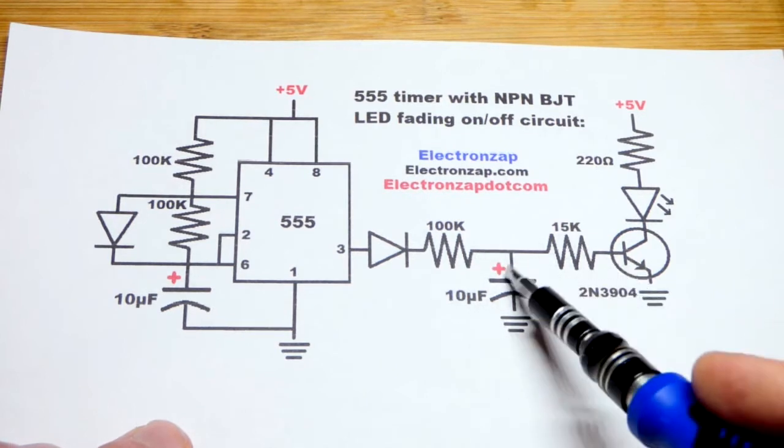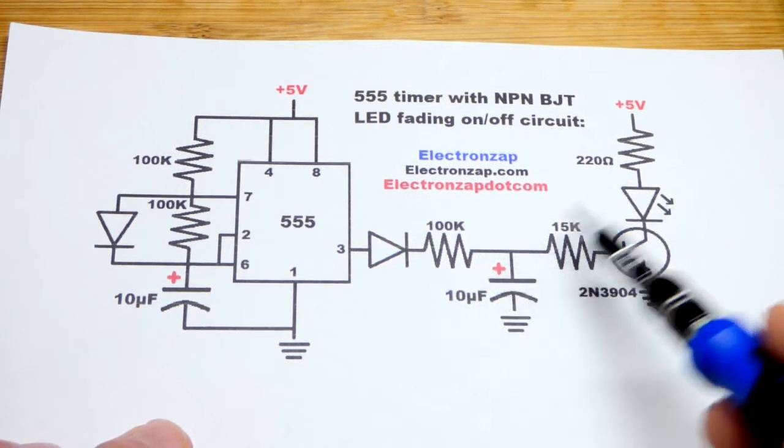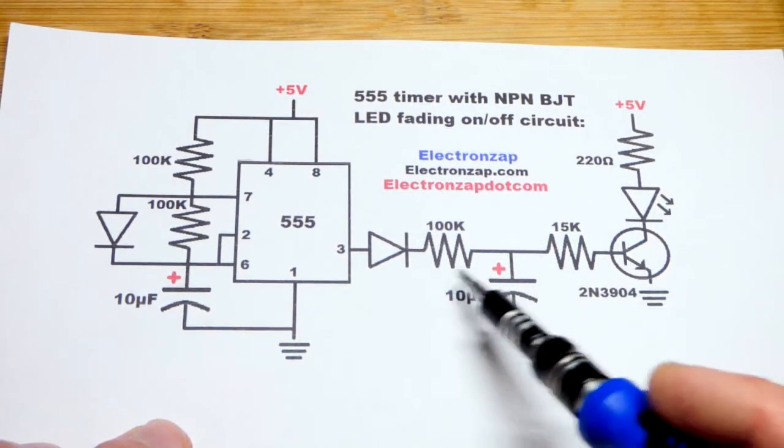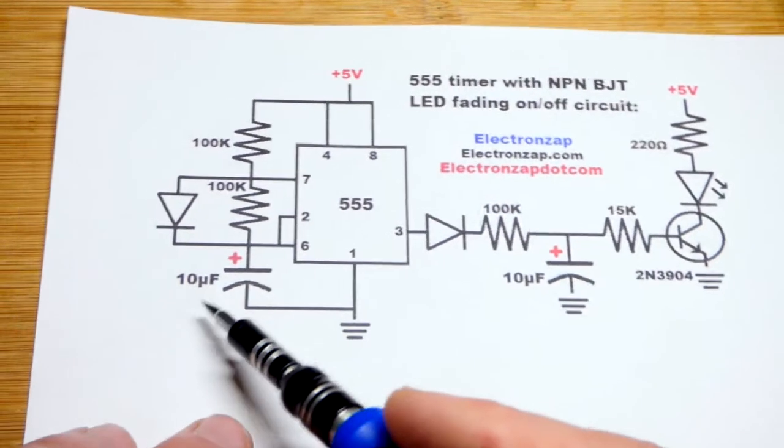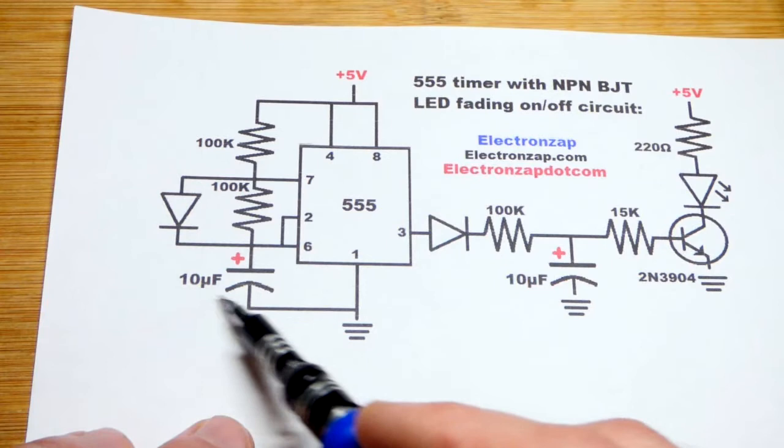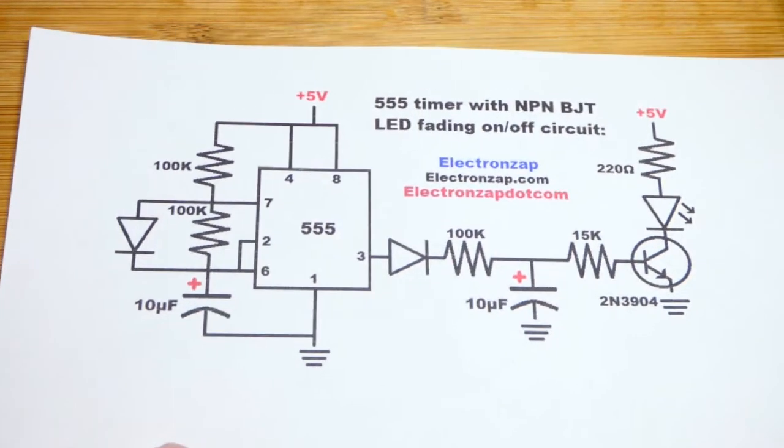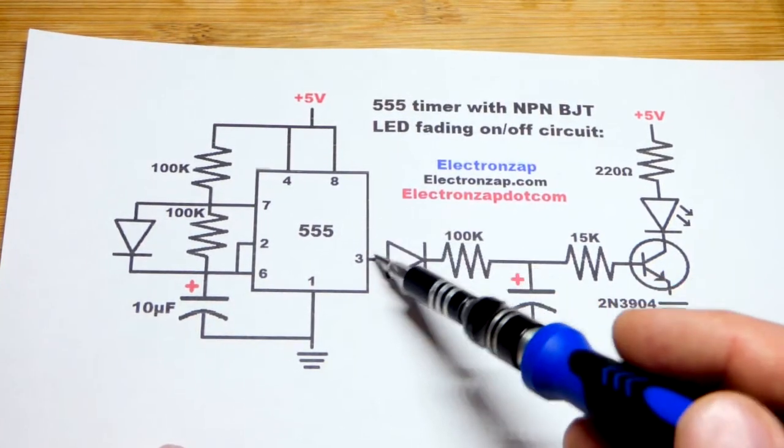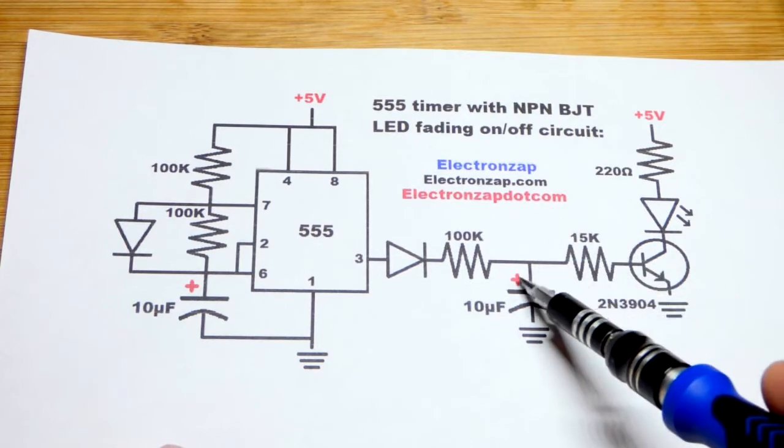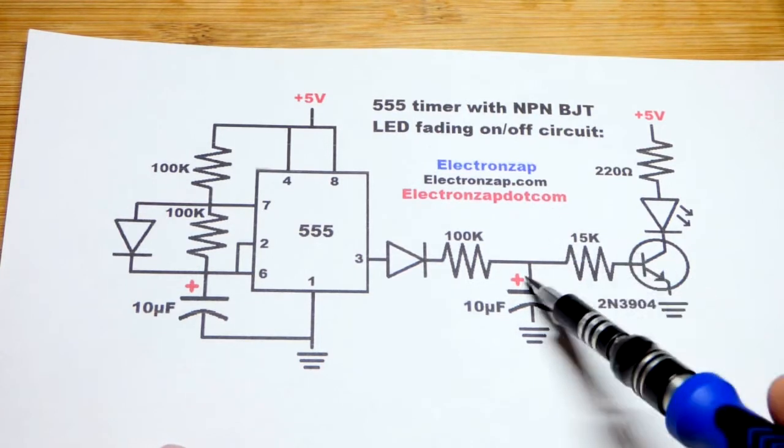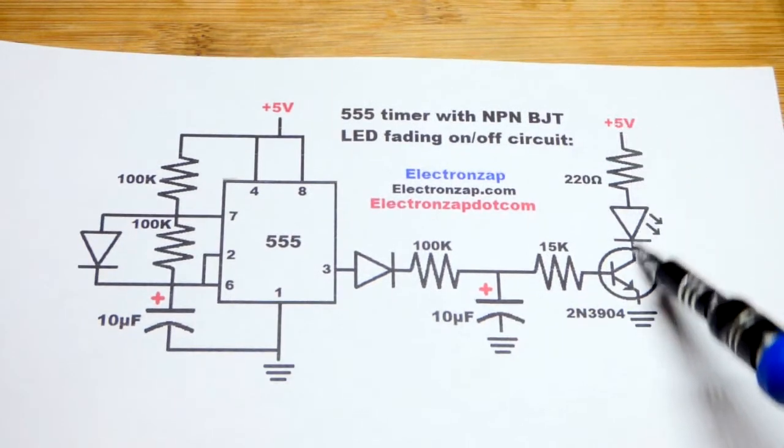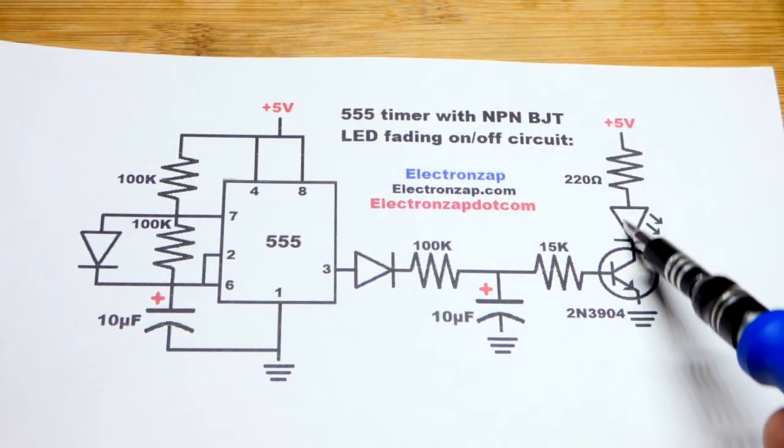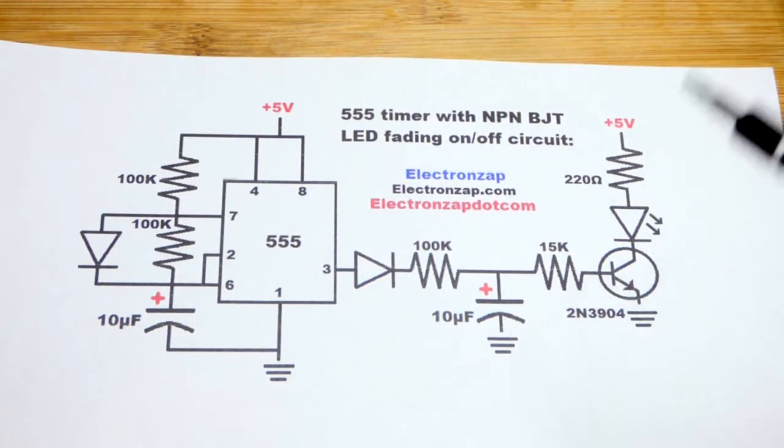But in any case last video we powered the LED directly with the capacitor. Now we can use a much lower value capacitor. 10 microfarad instead of 1000 microfarad which is also the value we're using for our timing. So in any case when the output is high the capacitor will charge. Once it's got enough voltage it will keep moving more and more current through the base to emitter. And a lot more current is going to flow through the LED. It's going to get brighter.